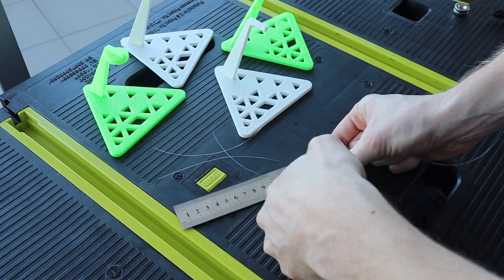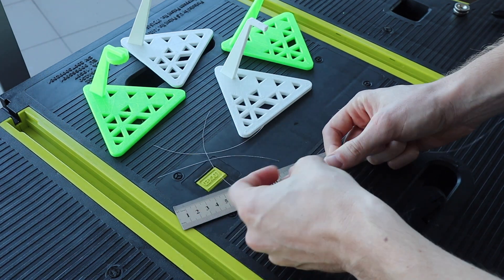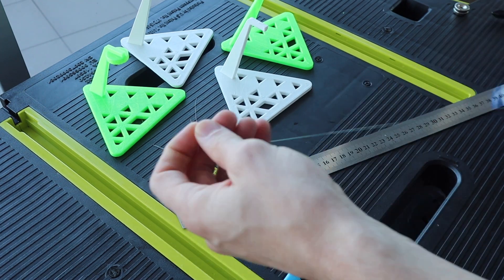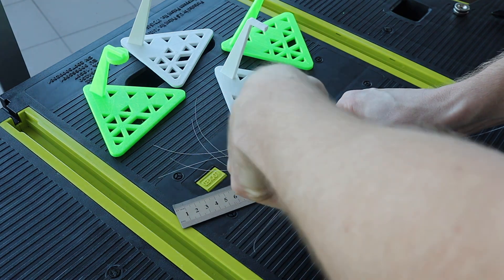Cut four lengths of fishing line, one around 8cm long and another three of exactly 12cm. If you're using knots instead of glue, then cut them a bit longer to allow for the knots.